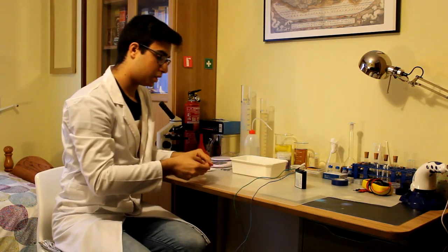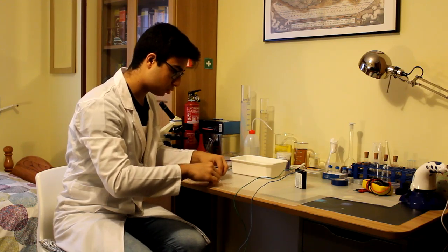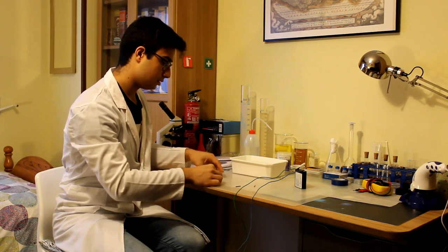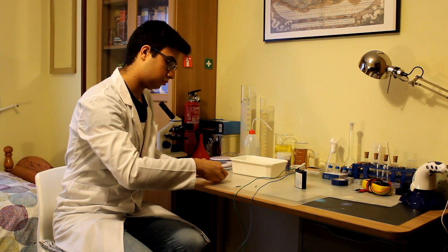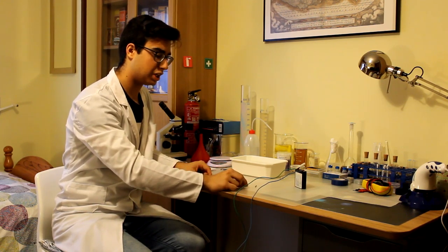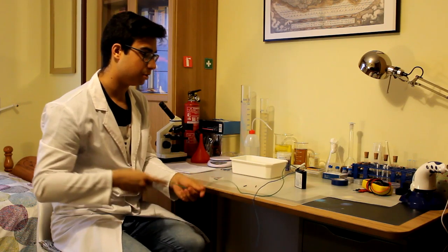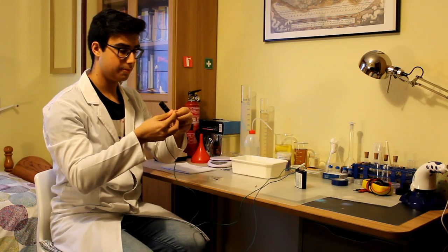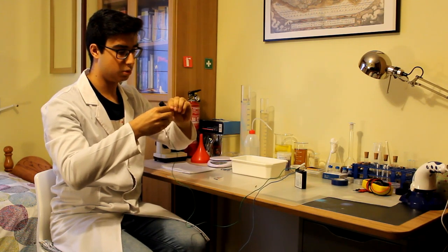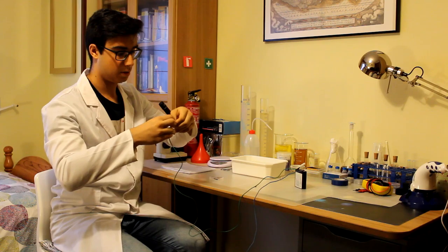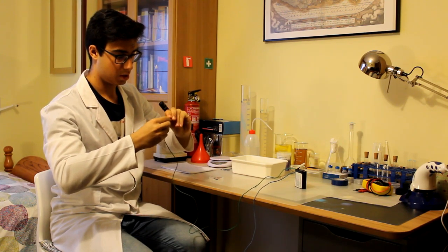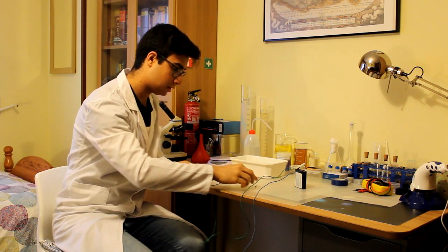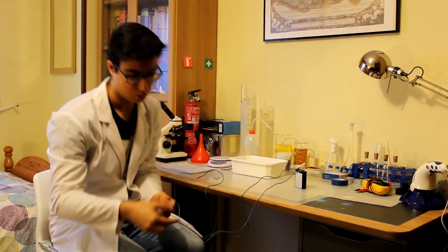Y lo que hacemos es que en los extremos ponemos un trozo de la mina de grafito del lápiz. Los trozos, pues, de unos dos o tres centímetros más o menos. Cogemos el extremo del cable y lo enrollamos tal que así. Lo mismo con el otro cable.